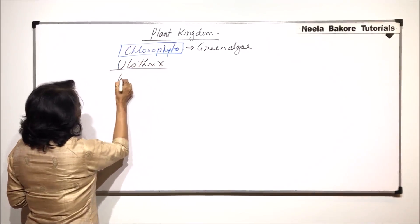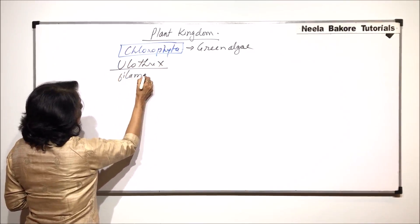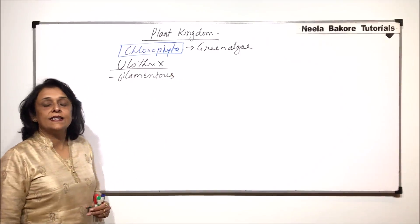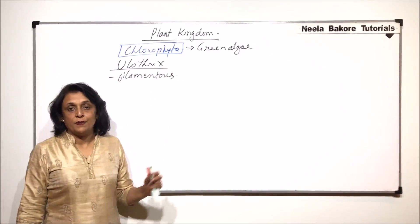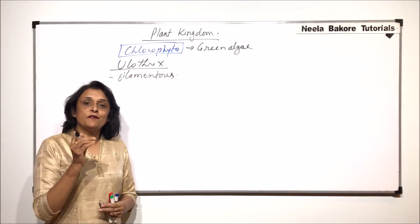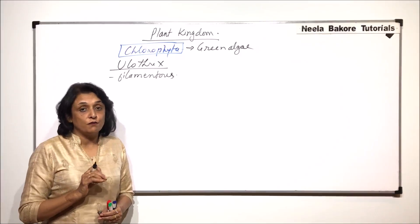Ulothrix is a filamentous green alga and it is considered as a multicellular organism. The reason why we call it multicellular is because there are different cells which are performing different functions.